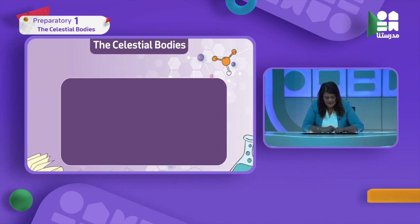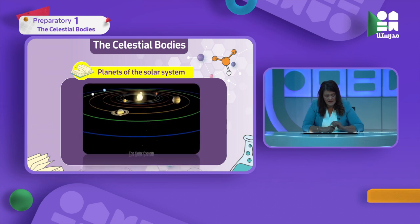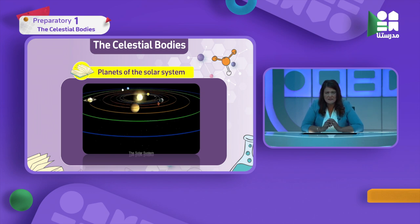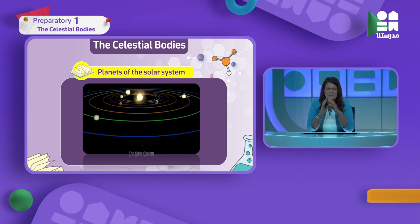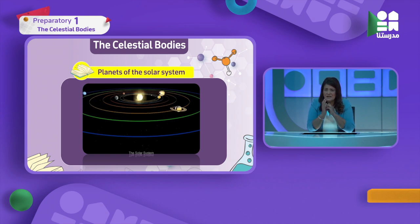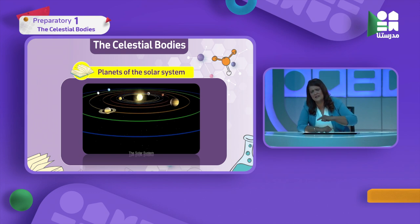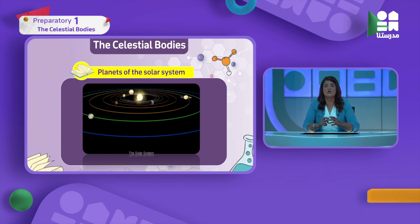We have talked about many celestial bodies. Now let's look at the picture as a whole. This picture shows the solar system, which is in permanent motion - continuous movement. The sun is in the center and is the biggest - bigger than all planets, moons, and celestial bodies. It is responsible for life on Earth. The 8 planets revolve around it in elliptical - oval-shaped - orbits.